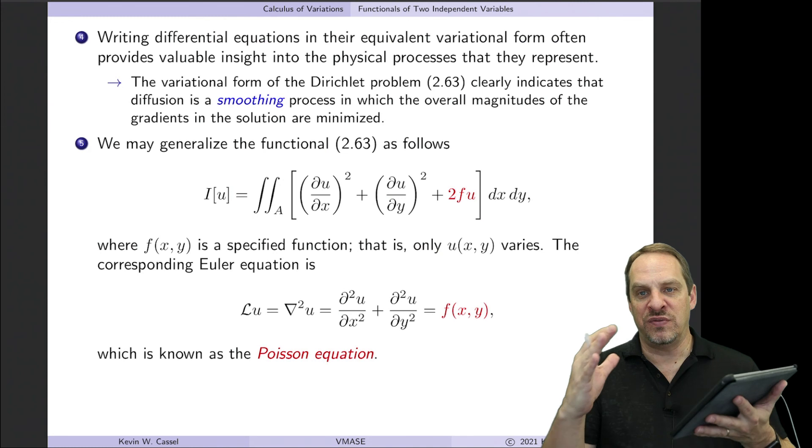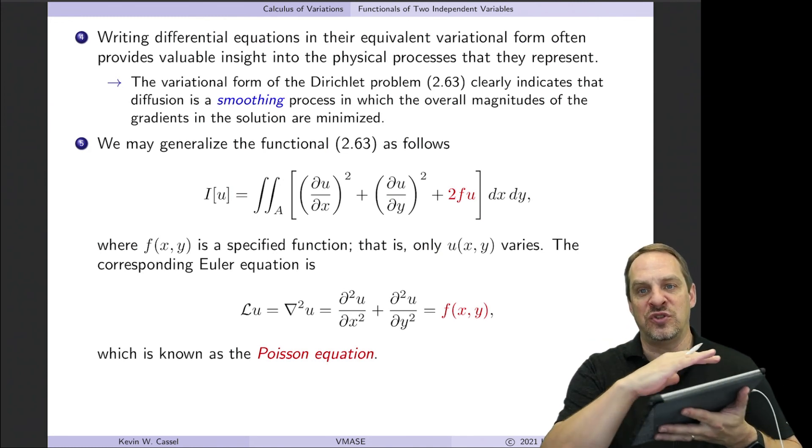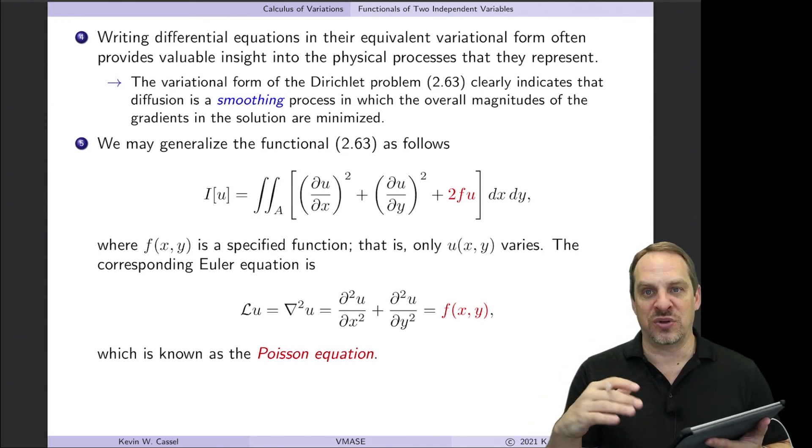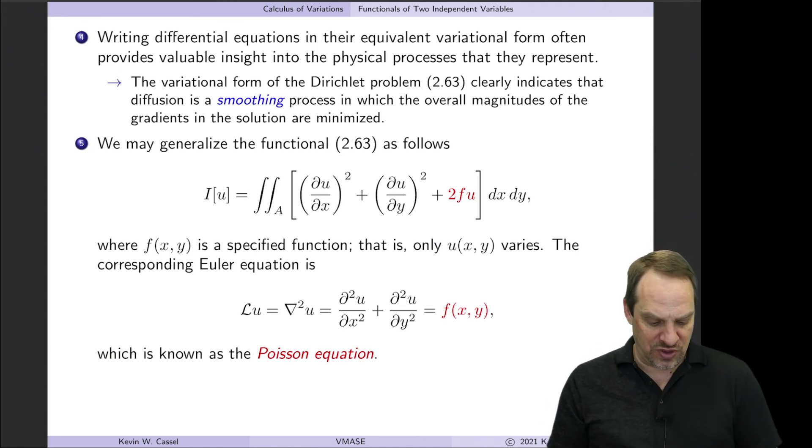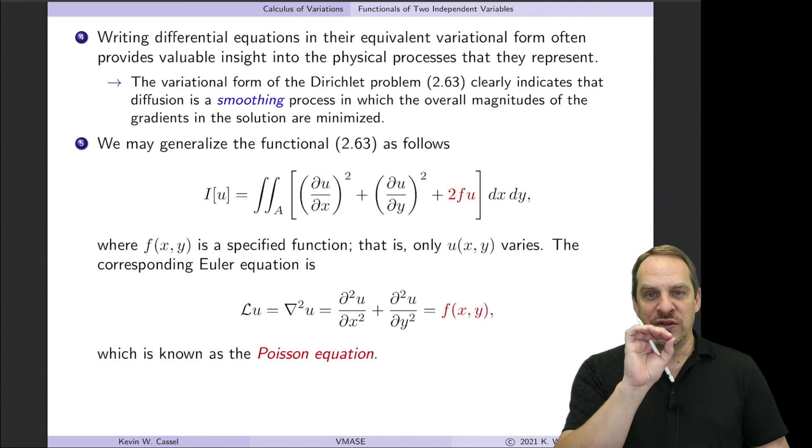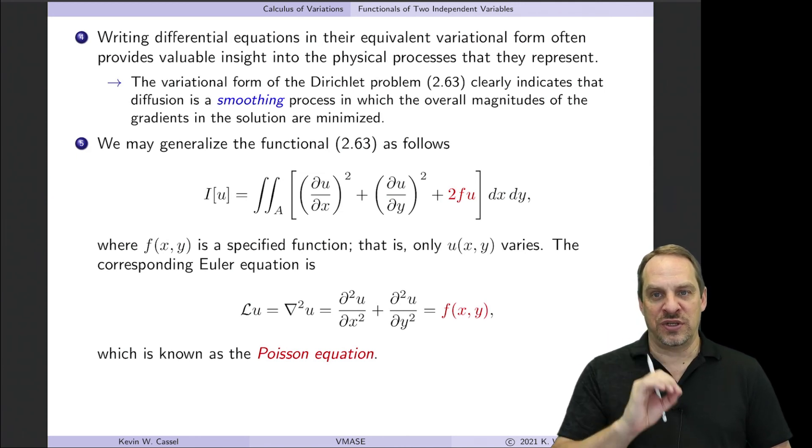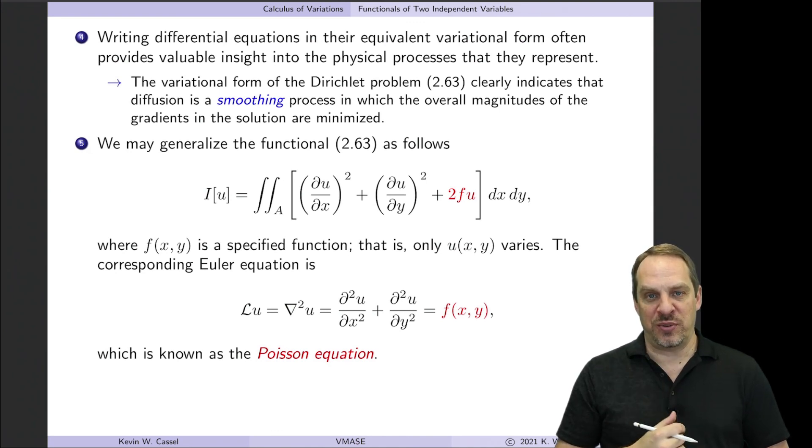So it's a smoothing process. It's going to take whatever sharp changes and large gradients in the temperature and smooth them out as much as possible. Again, given the domain, given the boundary conditions and so forth. So that's what I mean by the variational form giving us additional insight and intuition into the physical processes that these equations represent.